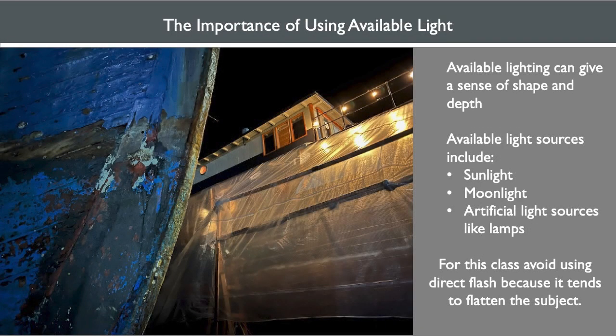Consider the way light impacts your photography. Light that is available to the eye is known as simply available light. Available lighting can give a sense of shape and depth without high contrast and flattening of the subject. Available light can come from many sources, such as sunlight, moonlight, artificial light sources, floodlights, streetlights, and even household lamps.